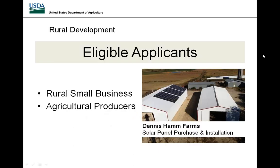I would like to talk about some general program parameters: application eligibility and project eligibility. There are two groups of eligible recipients for REAP funding — rural small businesses and agriculture producers. A business is a private entity, which can be a sole proprietor, corporation, partnership, electric utility or cooperative, which does include electrical cooperatives. Schools, non-profits, and municipal or government groups are not eligible for REAP funds.